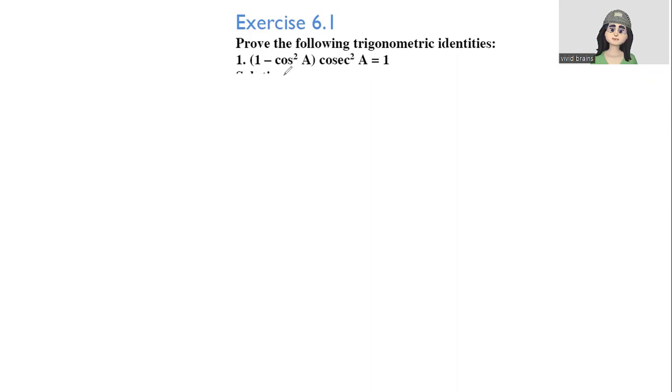In that, we are going by exercise by exercise. So now the first question follows like this. Prove the following trigonometric identities. You take the first one.